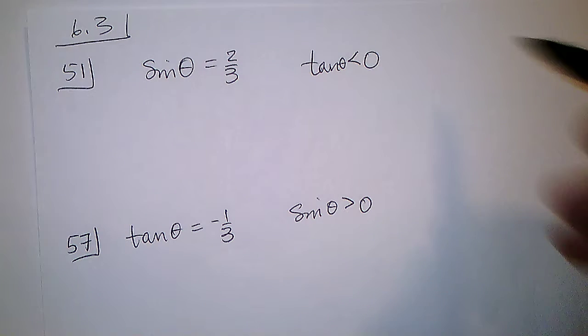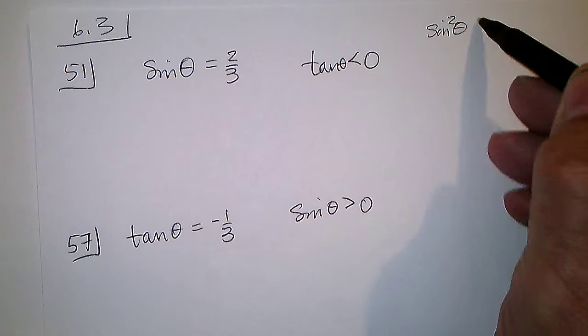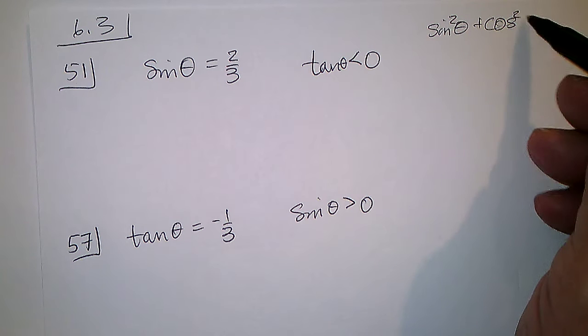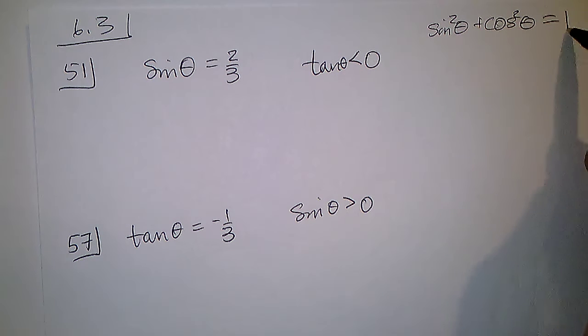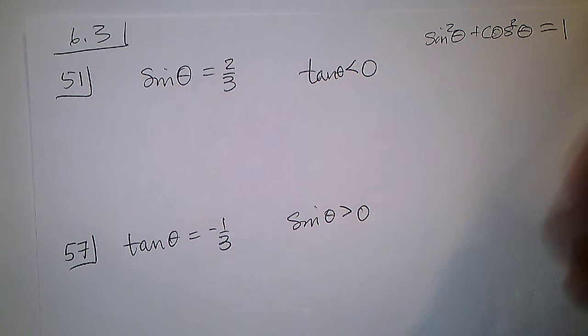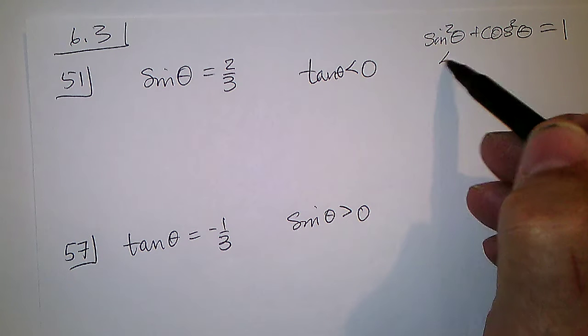Well, since sine squared of the angle plus cosine squared of the angle always equals 1, then 2/3 squared, which is 4/9, plus cosine squared of the angle has to be 1.